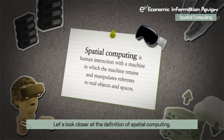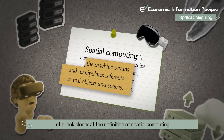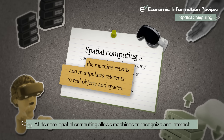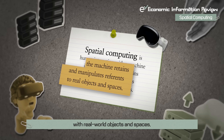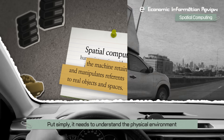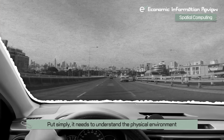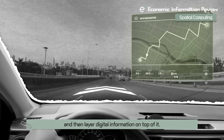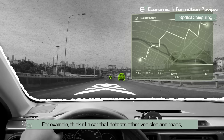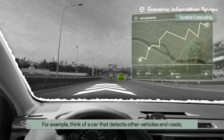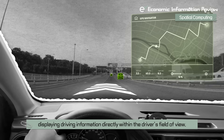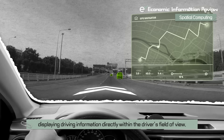Let's look closer at the definition of spatial computing. At its core, spatial computing allows machines to recognize and interact with real-world objects and spaces. Put simply, it needs to understand the physical environment and then layer digital information on top of it. For example, think of a car that detects other vehicles and roads, displaying driving information directly within the driver's field of view.